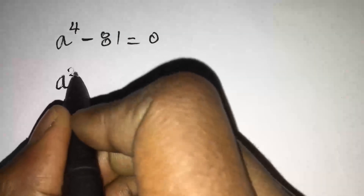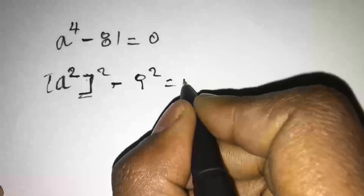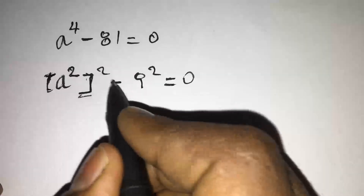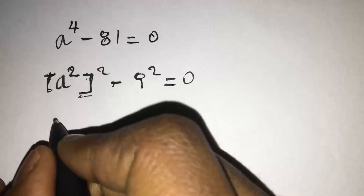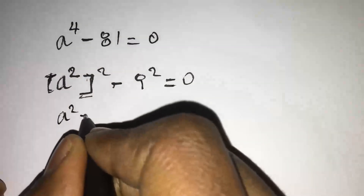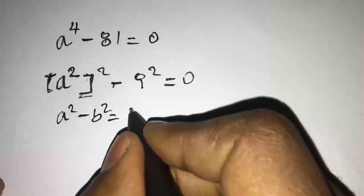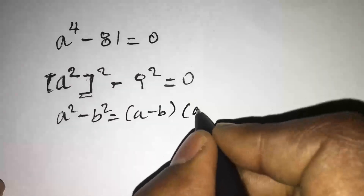First, we rewrite A to the power of 4 minus 81 as A squared, the whole squared, minus 9 squared, equal to 0. Here we apply the difference of squares rule: A squared minus B squared equals A minus B times A plus B.